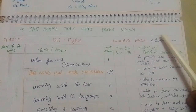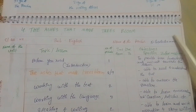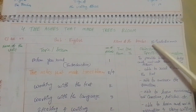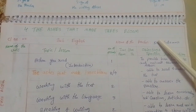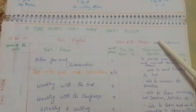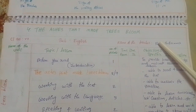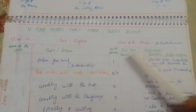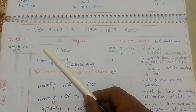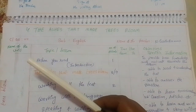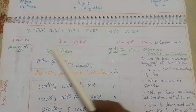Hi guys, welcome to my channel. Today we are going to discuss about 'The Ashes That Made Trees Bloom,' the fourth lesson in seventh English. This is the lesson plan in LIP model.